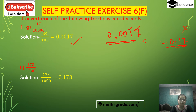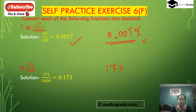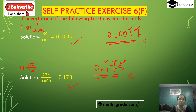Part h: 173 divided by 1000. The denominator 1000 has three zeros, so we place three digits after the decimal point. The numerator 173 has three digits, so counting three from the right we get 0.173. So 17 divided by 10,000 is 0.0017, and 173 divided by 1000 is 0.173.